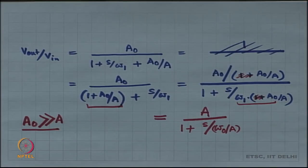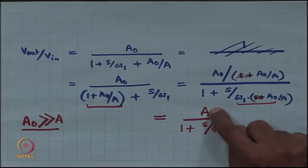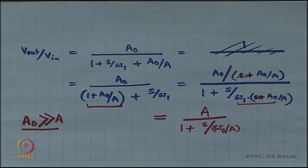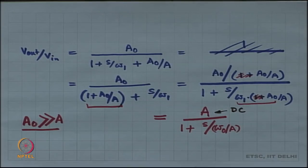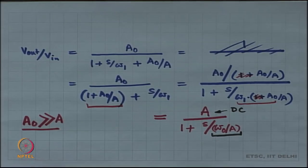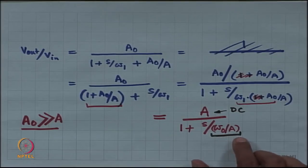If you have not chosen A to be much smaller than A naught, then your circuit is not going to give you the desired performance. Now this is the performance at DC. What is the 3 dB bandwidth of this system? The 3 dB bandwidth of this system is not related to omega 1 — it is related to omega naught, the unity gain bandwidth. It is the unity gain bandwidth divided by A.